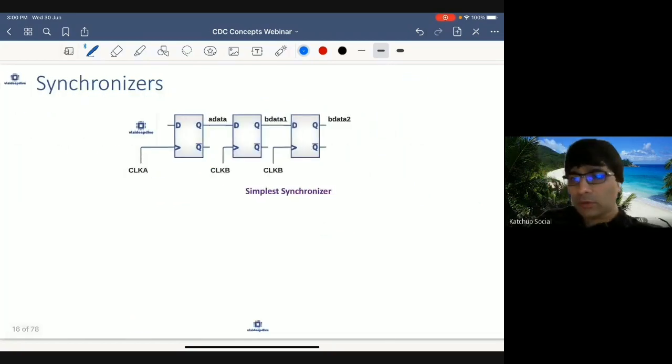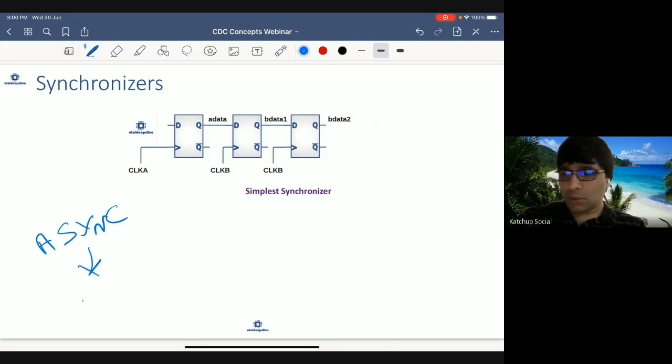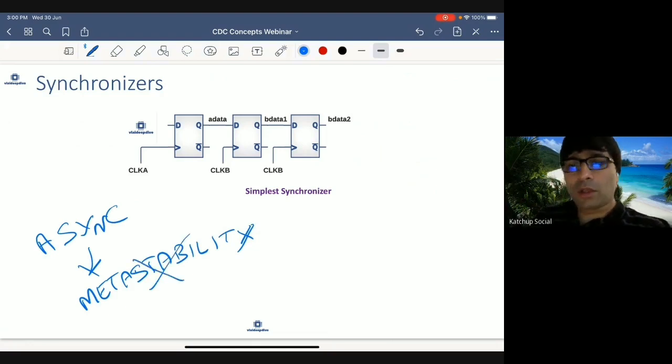So we had talked about that between asynchronous clocks, you cannot avoid metastability. If the clocks are async, you cannot avoid metastability. So what do you do? We had talked about that you can actually neutralize the metastability. So how can metastability be neutralized?